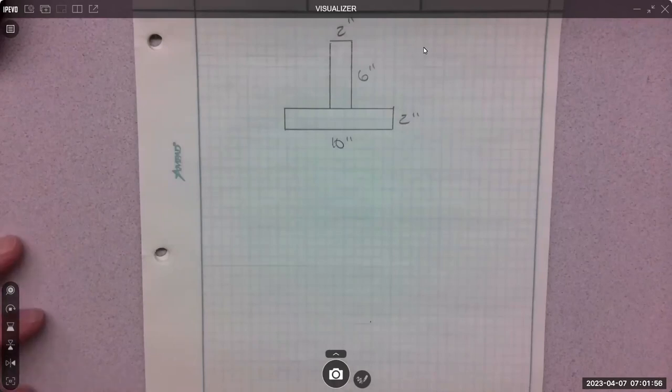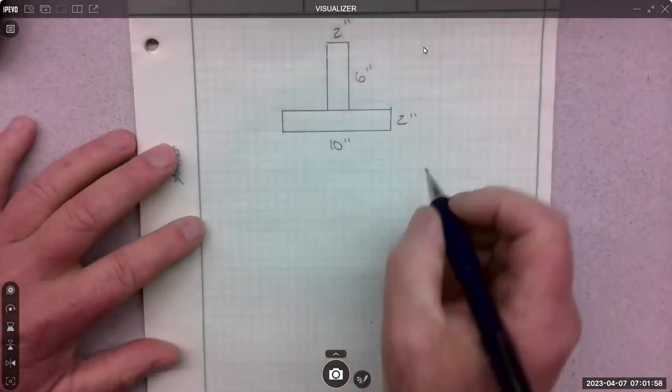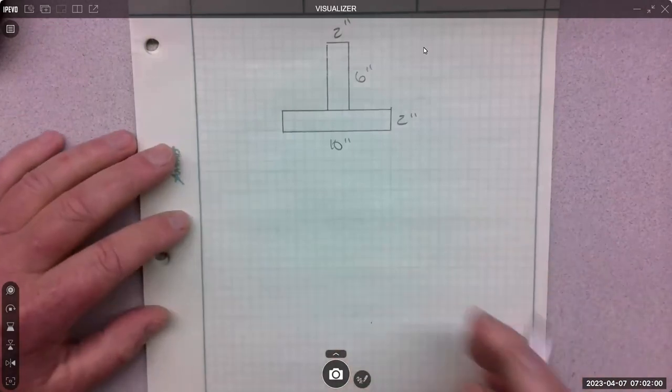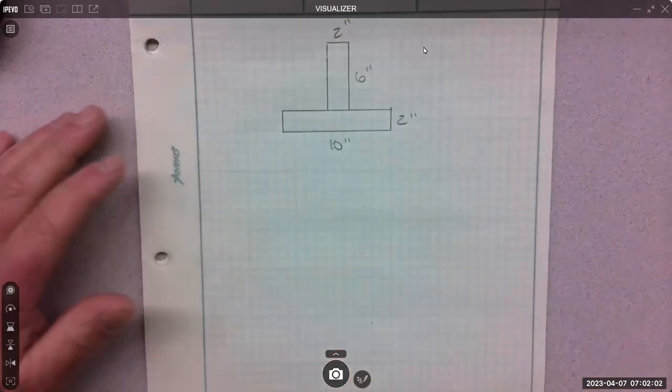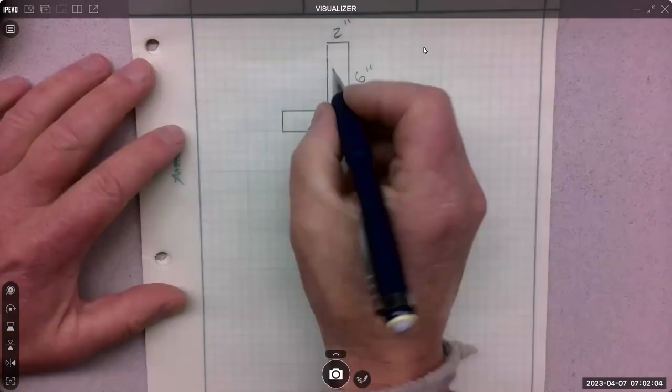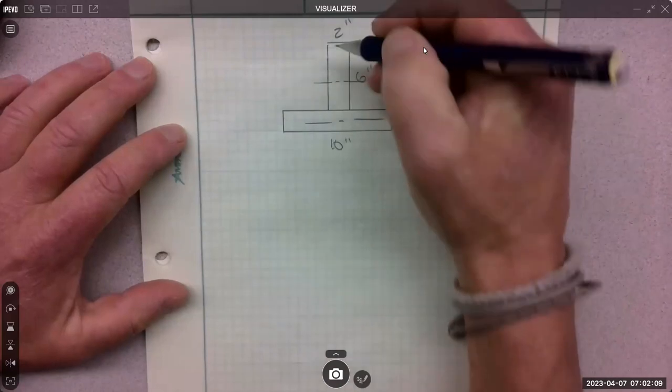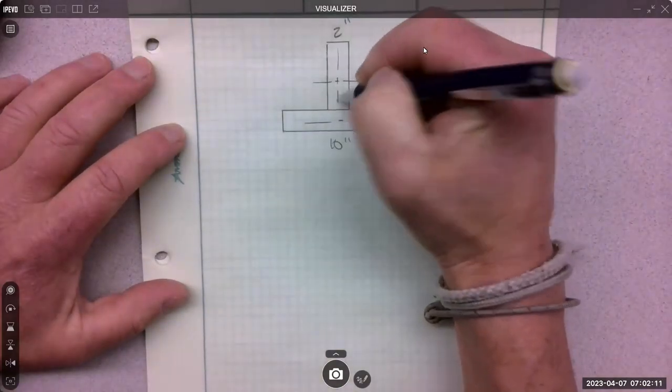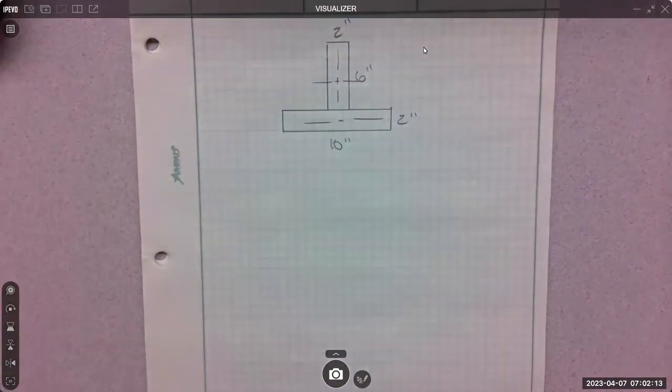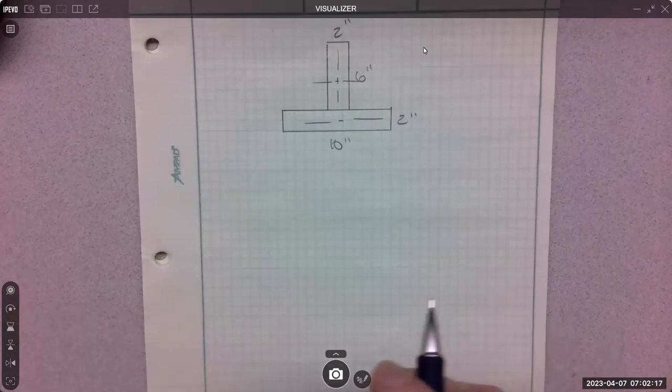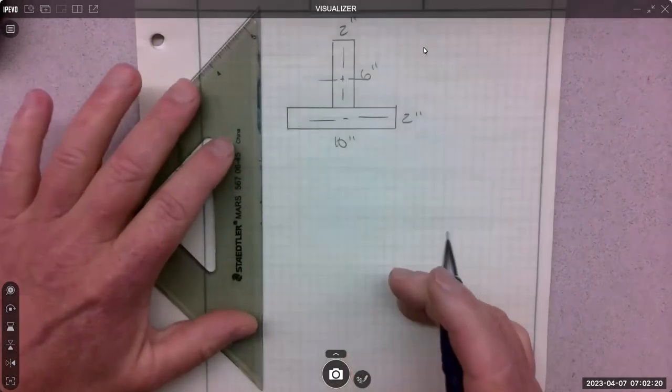It's pretty straightforward, but before you can do that, you have to have the composite centroid. So we have the individual centroids here and here. It's symmetrical about this axis, the y-axis, so we don't need to do anything there. But to get the y-bar, we'd have to run the centroid equation.